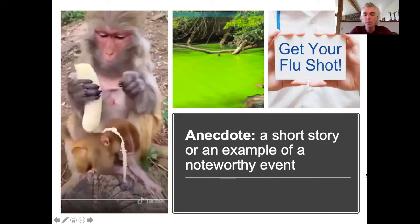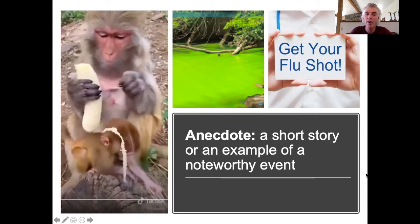Alternatively, some children begin to develop symptoms of autism following their standard vaccination schedules at an early age. Some parents misattribute this autism to the fact that their child received the vaccine. And many of you are probably well aware of the TikTok video that showed a monkey peeling strings off of a banana, causing many of us to think that monkeys don't like to eat those things either. But these are all examples of anecdotes that represent very poor forms of evidence.